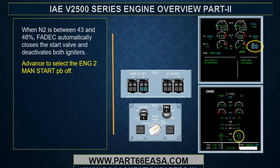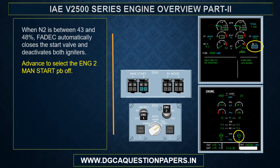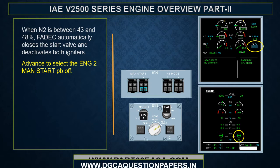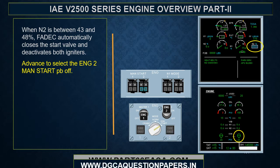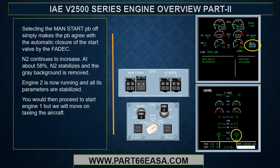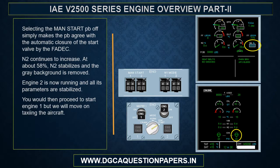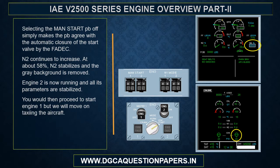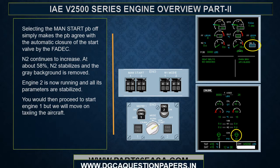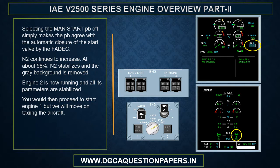When N2 is between 43 and 48%, FADEC automatically closes the start valve and deactivates both igniters. Select engine 2 manual start push button off — this simply makes the push button agree with the automatic closure of the start valve by the FADEC. N2 continues to increase, and at about 58%, N2 stabilizes and the gray background is removed. Engine 2 is now running and all parameters are stabilized.